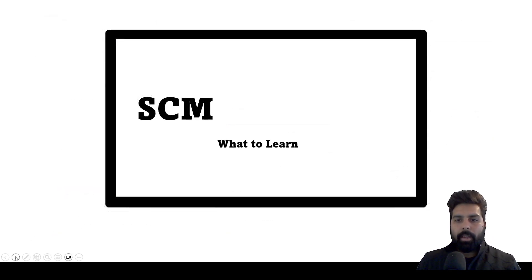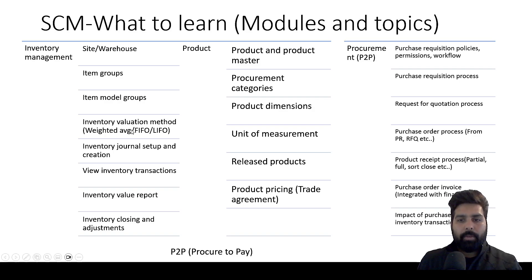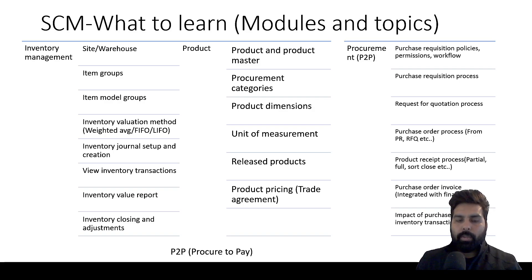If you've decided on Supply Chain, here are the bare minimum topics to prepare for. Start with Inventory Management: learn how sites and warehouses are created, the concept of item group, item model group, and the different inventory valuation methods — I have an exhaustive series on valuation methods you can explore. Also learn inventory journal setups and creation, how to analyze inventory transactions, how to view the inventory value report, and how inventory closing and adjustment works.